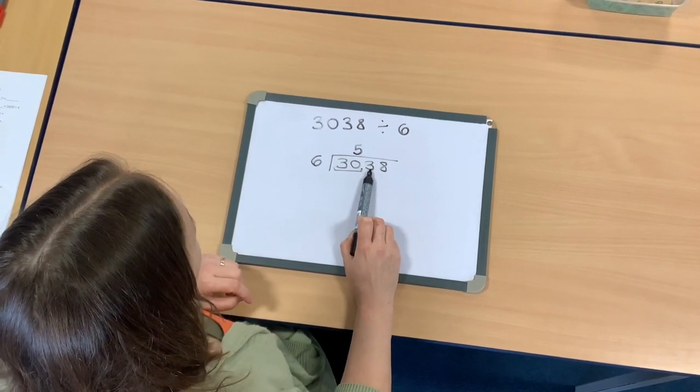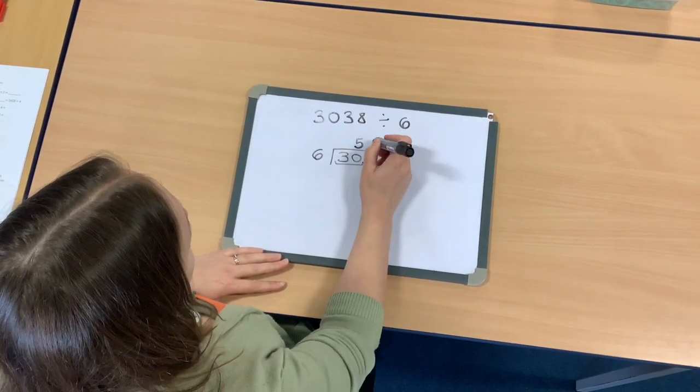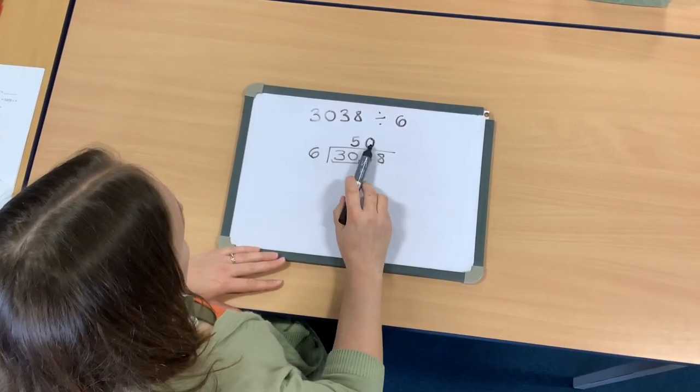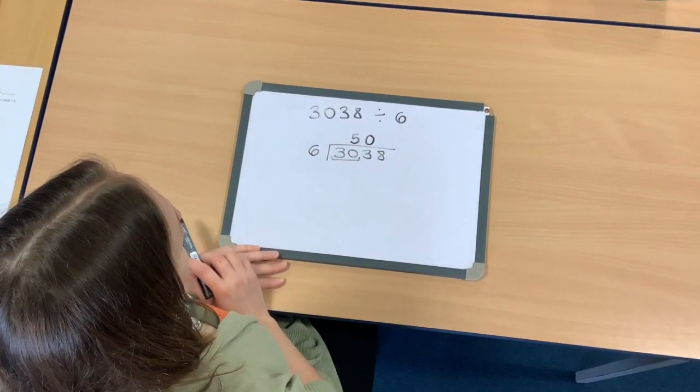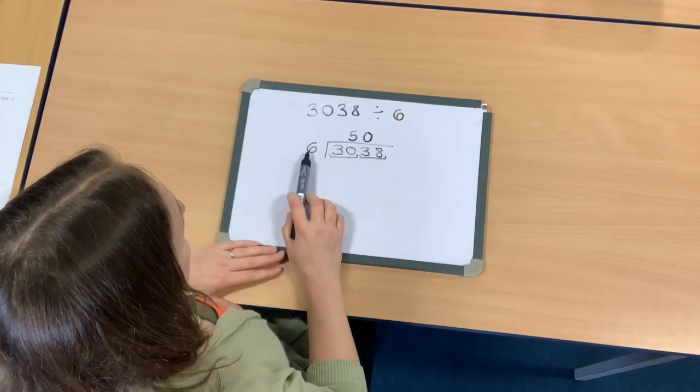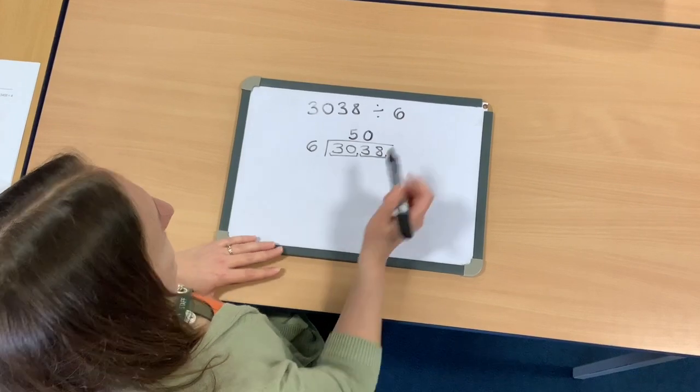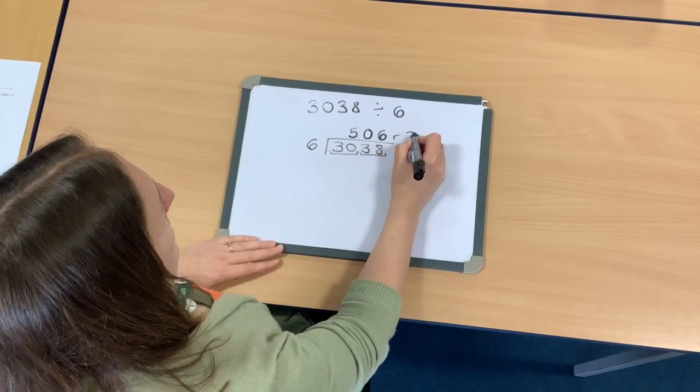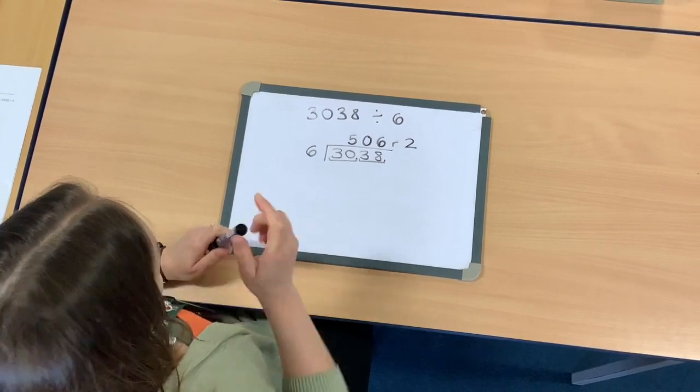I can now move on to my tens. I'm going to have the same problem again—I've only got 3 tens and I can't split that into 6 equal groups. Because I can't do it, I must put zero, just like when we would have done with long division. I must put a zero there to hold that place. Then I take my tens together with my ones, so I've got 38 ones. If I'm thinking about my 6 times table, I know that 36 is a multiple of 6, and it's 6 times 6, and then I've got 2 left to get to 38. So the answer is 506 remainder 2.